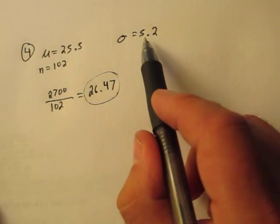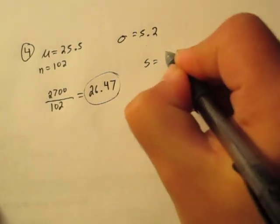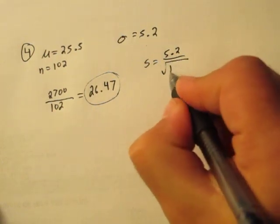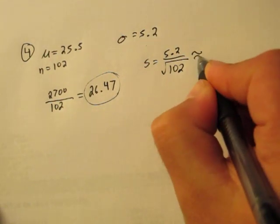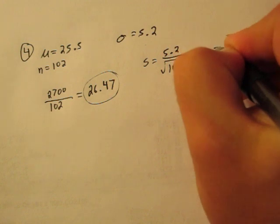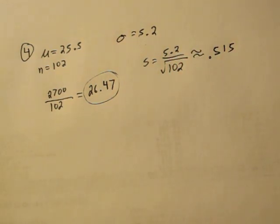First thing we're going to do, let's find the sample standard deviation. s equals 5.2 divided by the square root of 102. Our sample standard deviation is about 0.515.